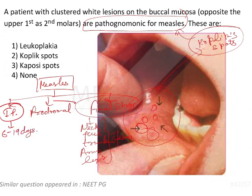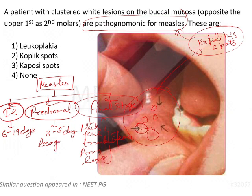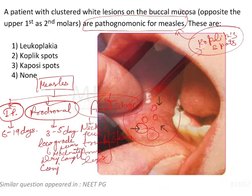That is followed by the prodromal phase, which is generally 3 to 5 days, varying from 2 to 5 days or more. During this phase there will be low-grade to moderate fever and dry cough.